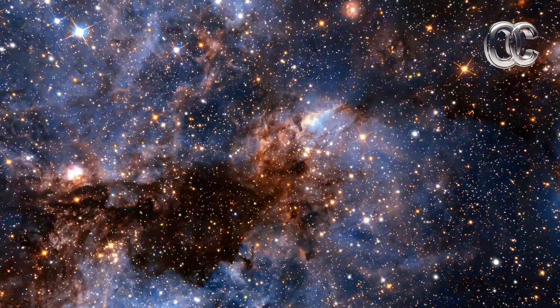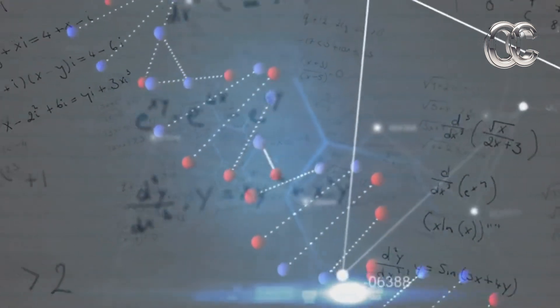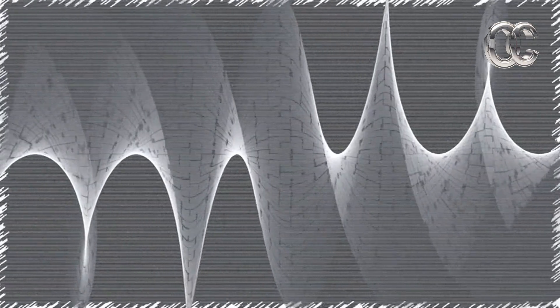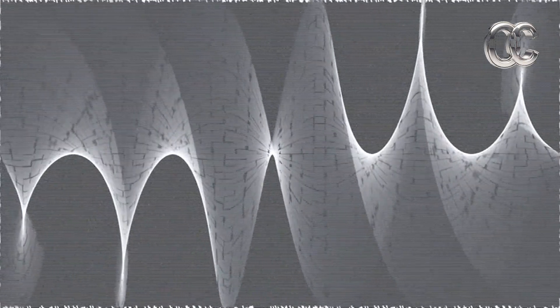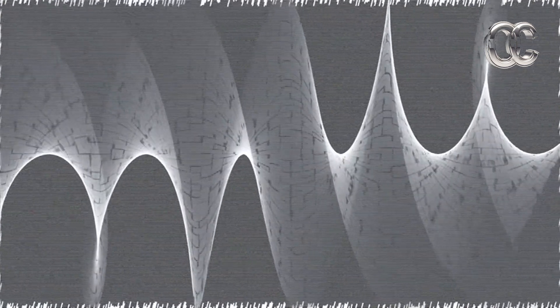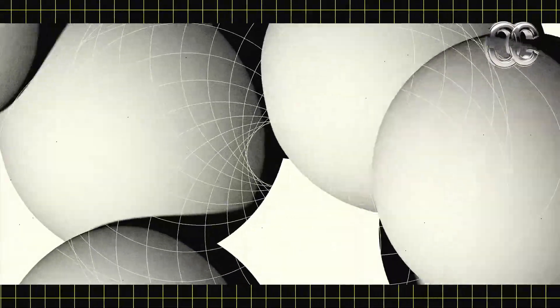Although quantum tunneling seems abstract, analogies help visualize it. Mountain analogy: In classical physics, a ball must roll over a mountain to reach the other side. In quantum mechanics, the ball has a chance to appear on the other side without going over it. Ghost wall analogy: Imagine a wall is like a ghost. Sometimes particles pass through it like a ghost walking through a wall. These analogies help grasp the strangeness of quantum behavior.